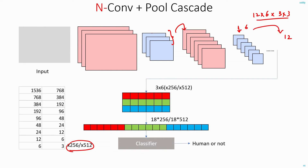Finally, you get a 3x6 output of depth 256 or 512, which you stretch into a single one-dimensional vector and feed to a classifier. The classifier looks at this big vector to determine what kind of image it is. This is how classification is performed using a convolutional neural network.